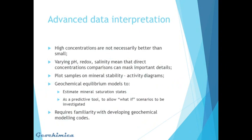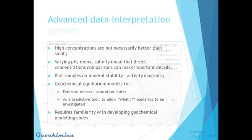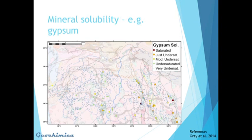More advanced data interpretation: high concentrations in hydrogeochemistry are not necessarily better than smaller concentrations — we need to consider the pH, redox potential, and salinity of our samples. One option is to plot samples on mineral stability diagrams. We can look at groundwater equilibrium models, which can be used to estimate mineral saturation states and also used as a predictive tool to ask 'what if' scenarios. This requires some familiarity with developing geochemical equilibrium models and using modeling codes. This example shows gypsum solubility as a saturation index, highlighting samples which are saturated, very under-saturated, or somewhere in between. If oxidizing sulfide bodies are producing sulfate, they may approach gypsum saturation.